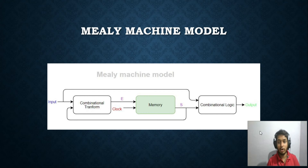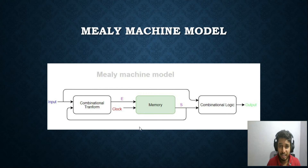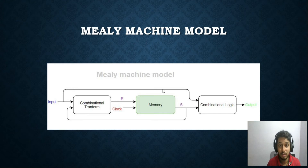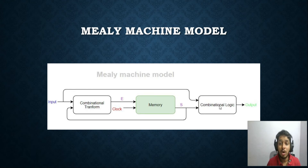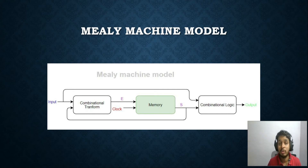The Mealy machine model looks similar — there is a combinational transform, and excitation variables are generated from both input and state variables with a global synchronous clock. However, the output is generated from a combinational logic block that takes not only the state variables but also the input. So the output is a function of both state variables and input variables — that is the key difference between the Mealy and Moore machine models.